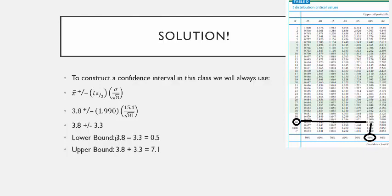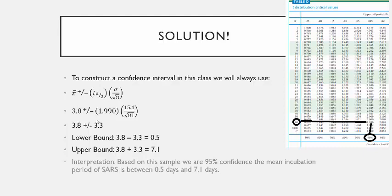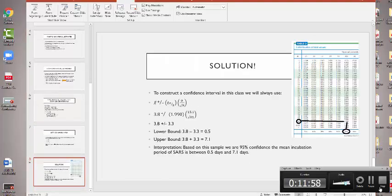The lower bound is 3.8 − 3.3 = 0.5, and the upper bound is 3.8 + 3.3 = 7.1. So I'm 95% confident the real mean is somewhere between 0.5 days and 7.1 days. Based on this sample, we are 95% confident the mean incubation period of SARS is somewhere between 0.5 days and 7.1 days. I'm going to follow this up with more examples, but this was a quick introduction to confidence intervals.